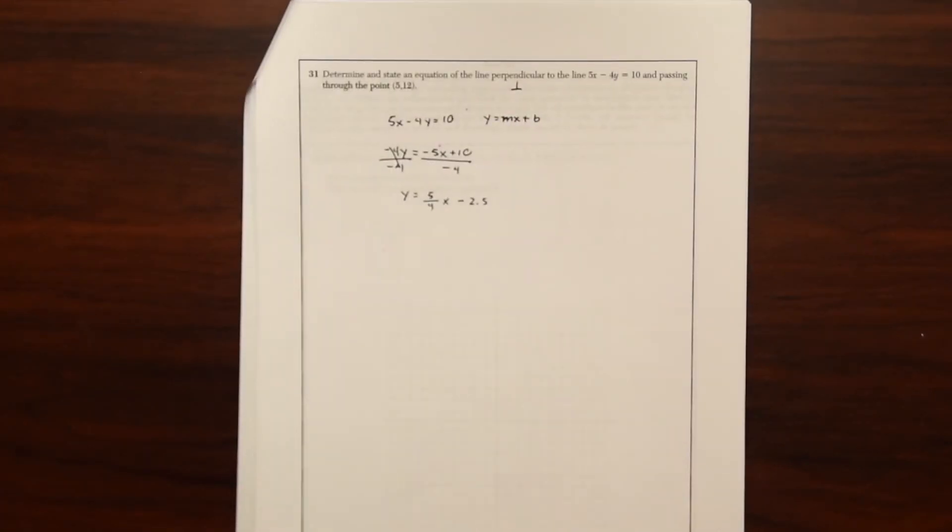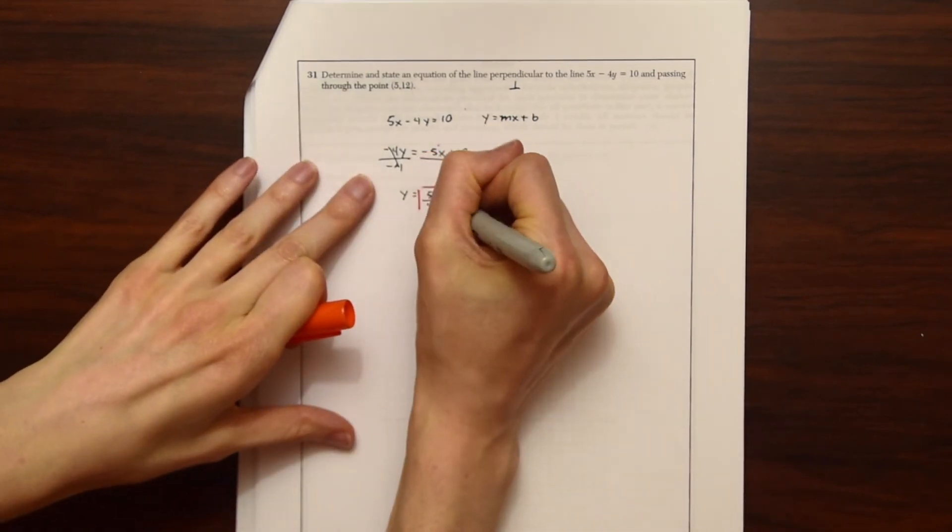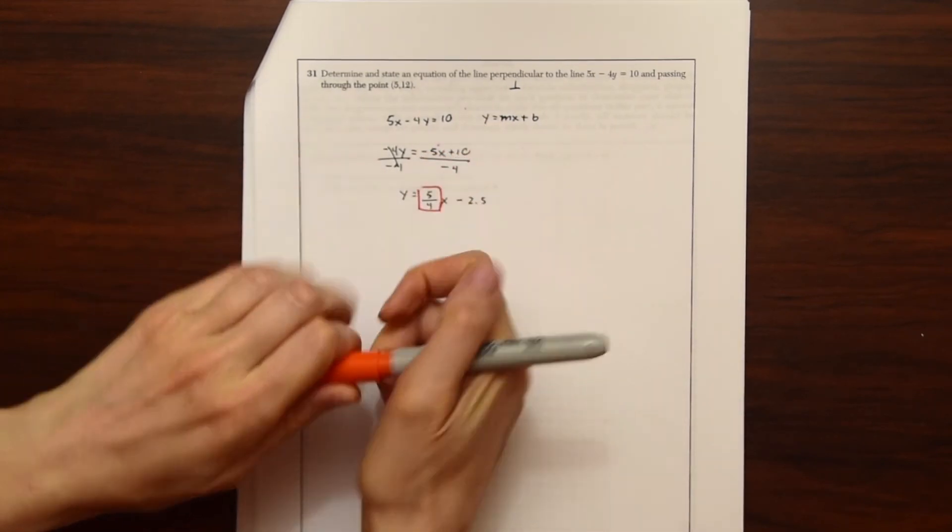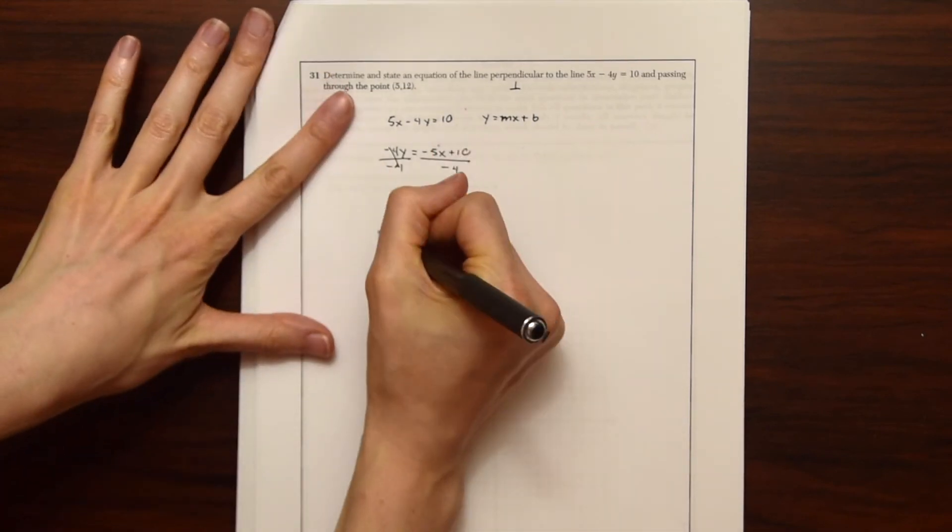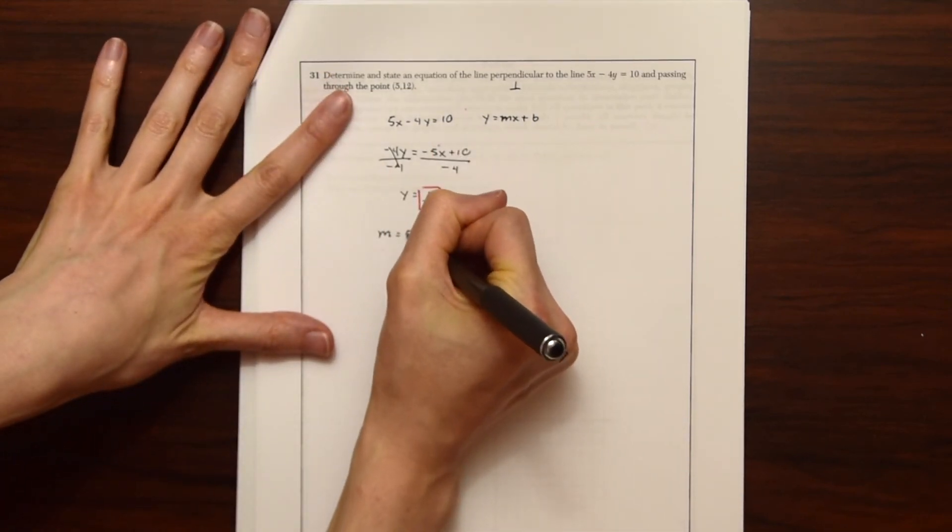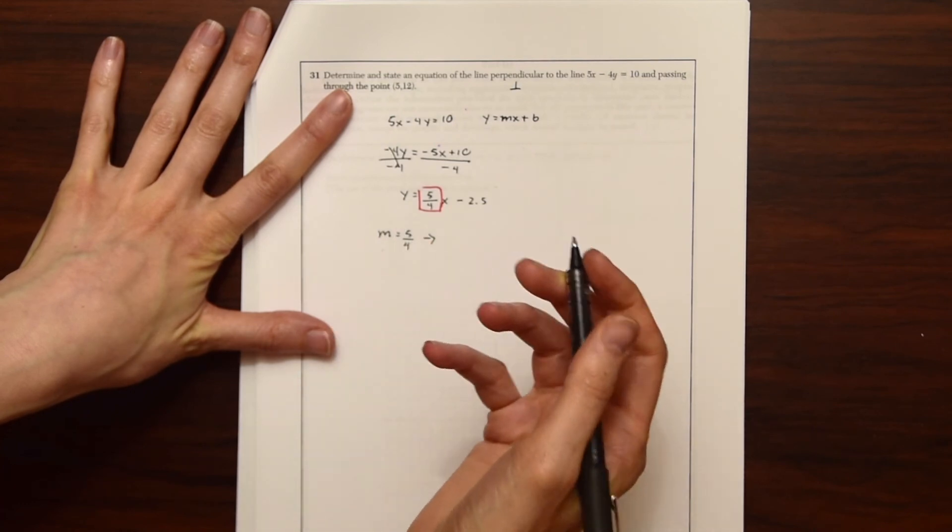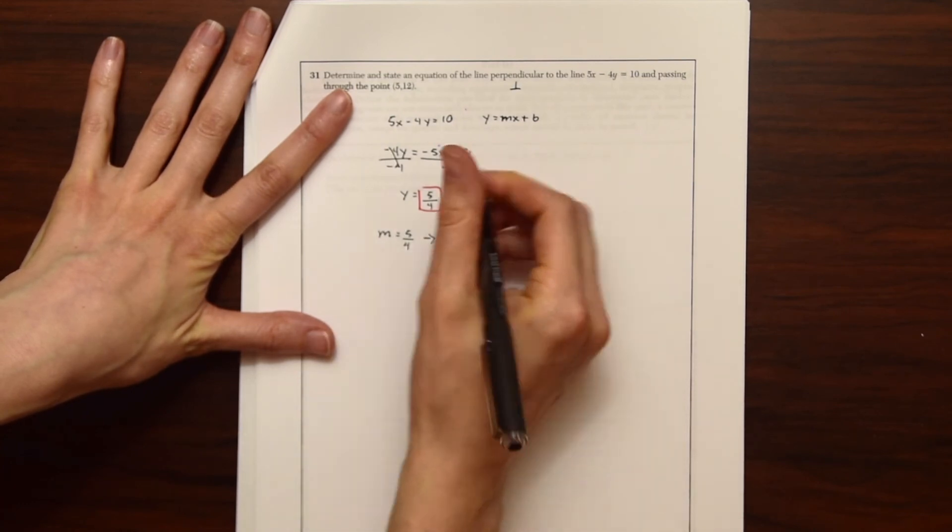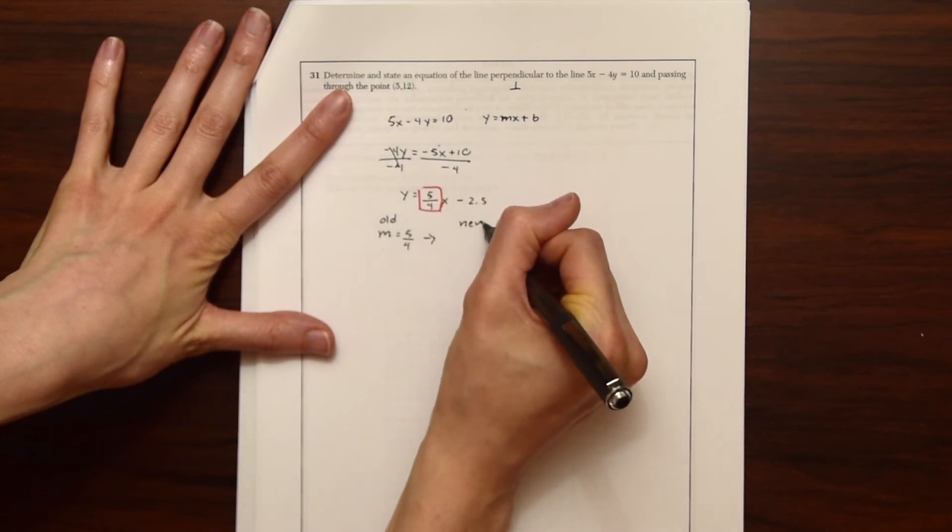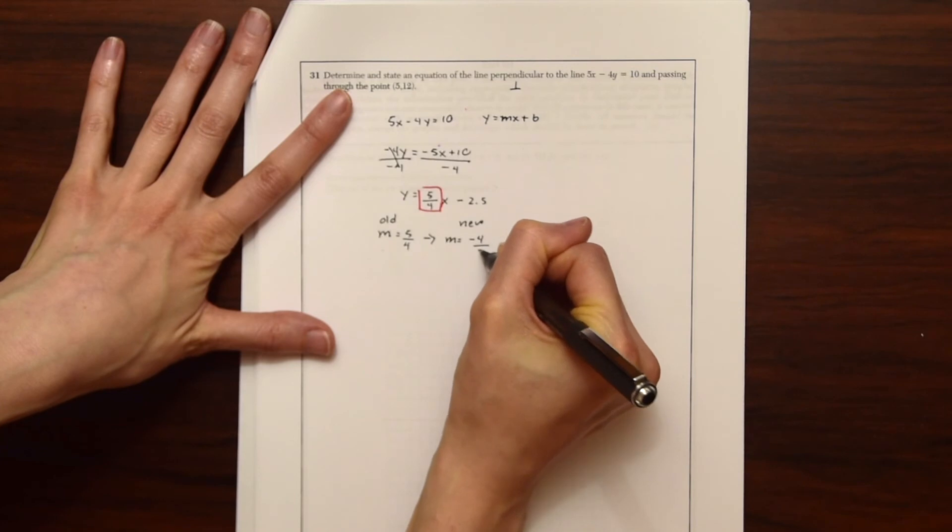What we're going to take from this is the slope. And since we want it perpendicular, we're going to flip and negate it. So this is our old slope. And now for our new slope, we're going to flip and negate it, which will give us negative 4 over 5.